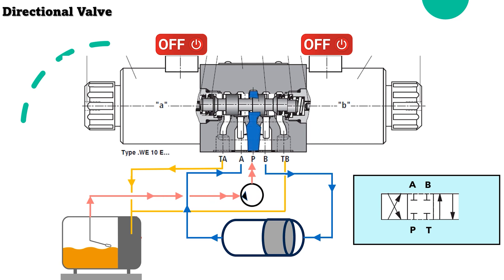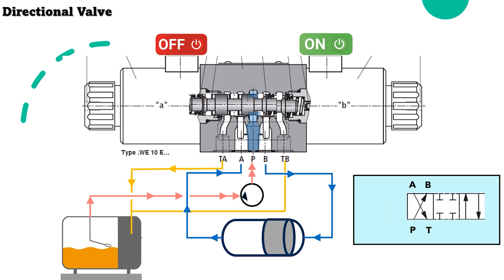When solenoid B is energized, the spool will move to the left direction. The path will open from P to B.